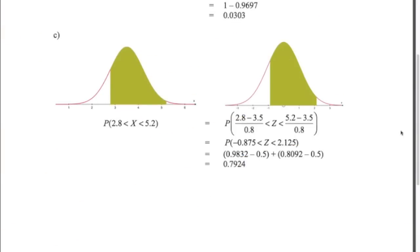Last example, very similar. We're looking for the probability of waiting between 2.8 and 5.2 minutes. Here I've converted both of those x values into z values. You can see I've done it in this place here. We've got a negative and a positive. I showed you how to deal with that in the last video, how to deal with a negative z value and a positive z value. I've done it using method 1. Final answer: 0.7924.